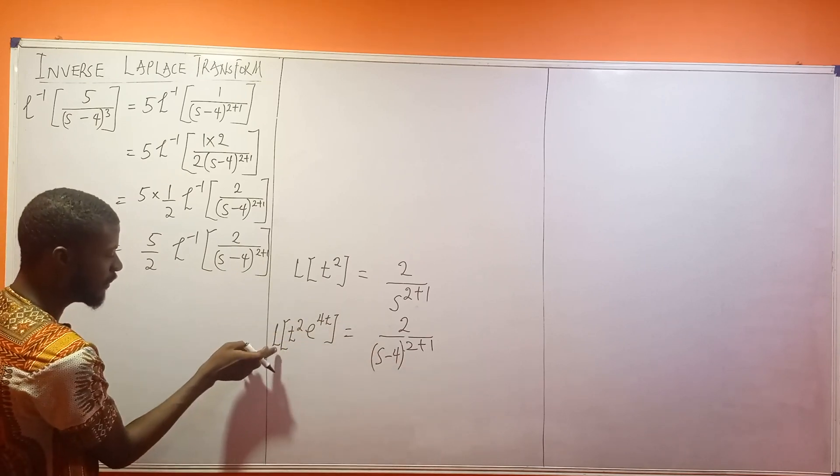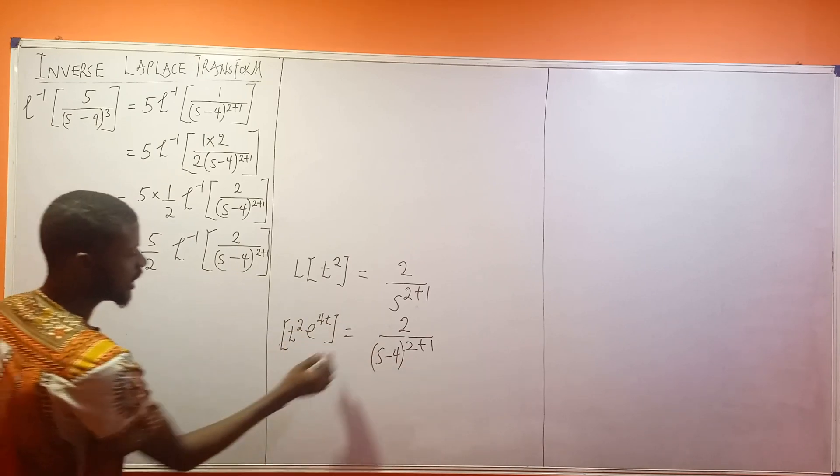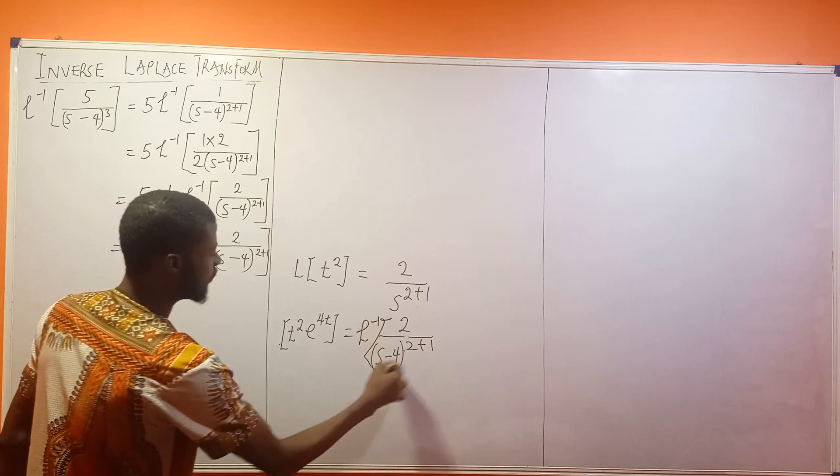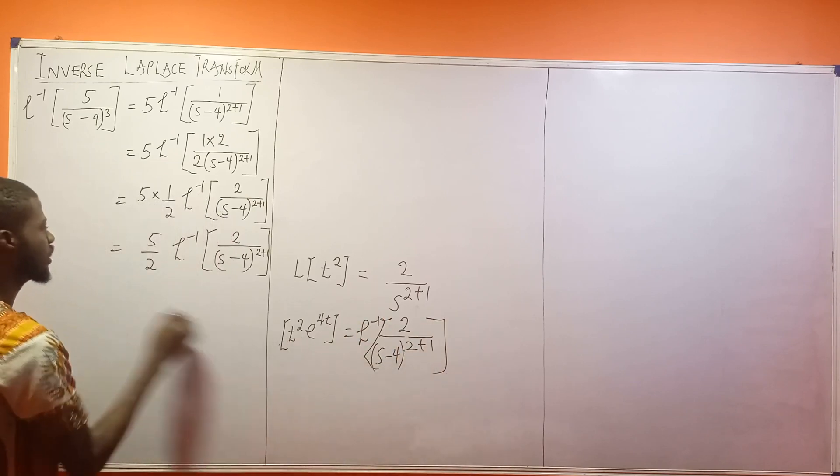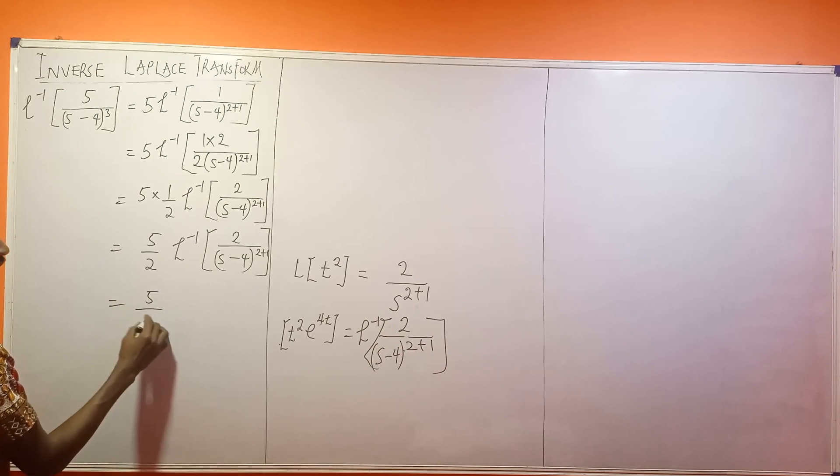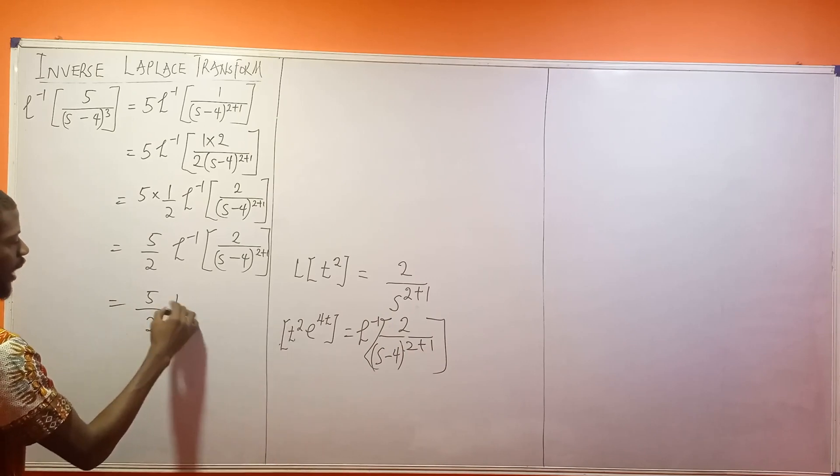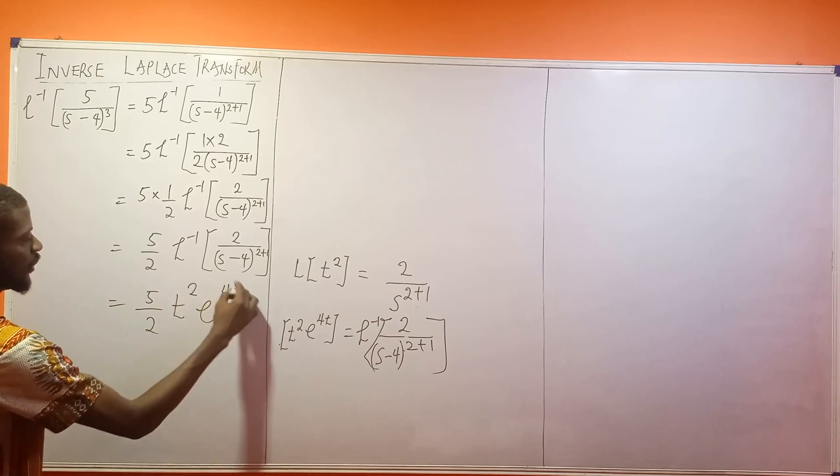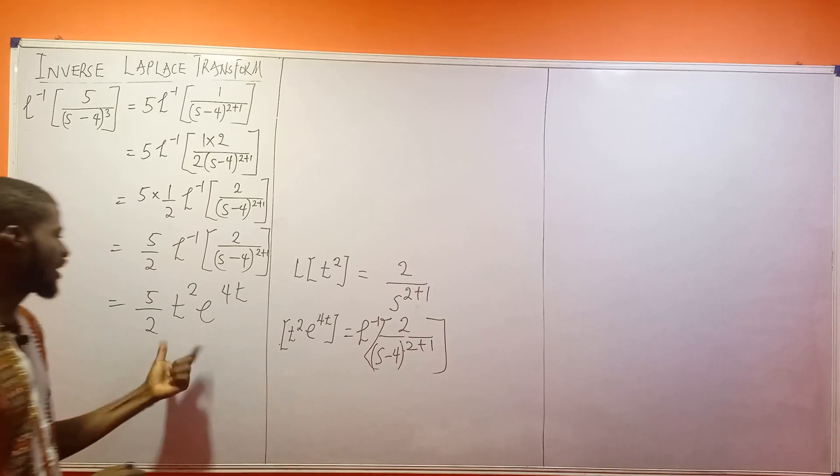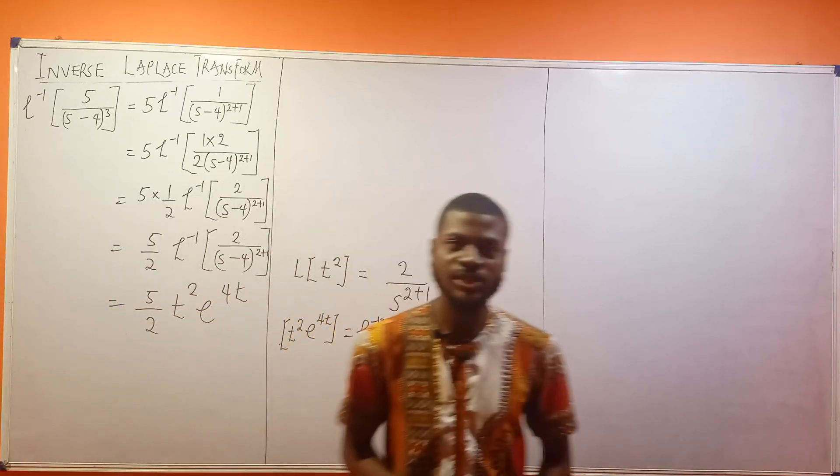That tells me if I move this Laplace to the other side, the inverse Laplace of everything here is equal to: 5/2 times t² times e^(4t). So this is the final answer to that question.